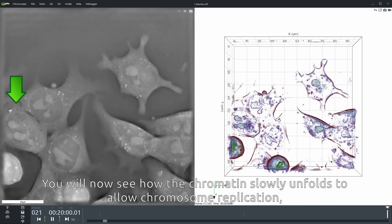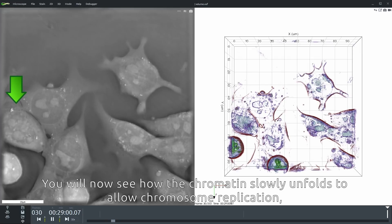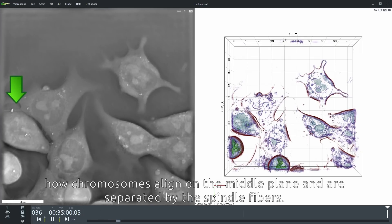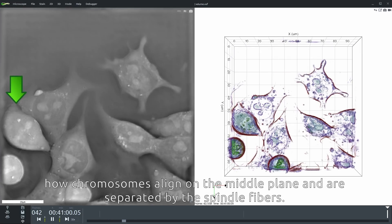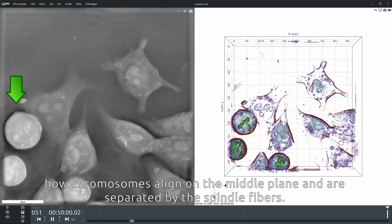You will now see how the chromatin slowly unfolds to allow chromosome replication, how chromosomes align on the middle plane and are separated by the spindle fibers.